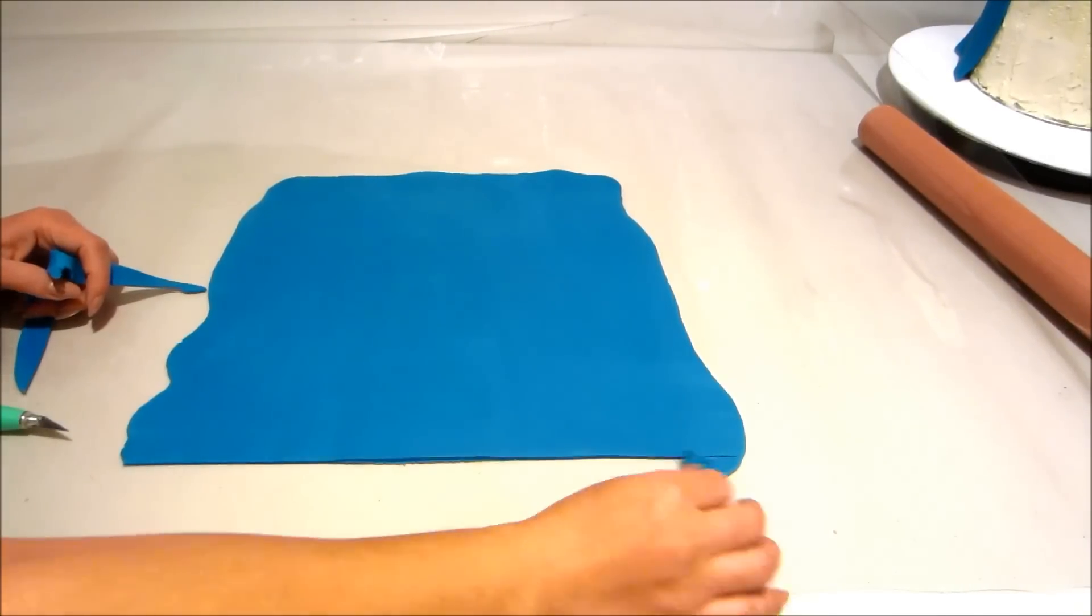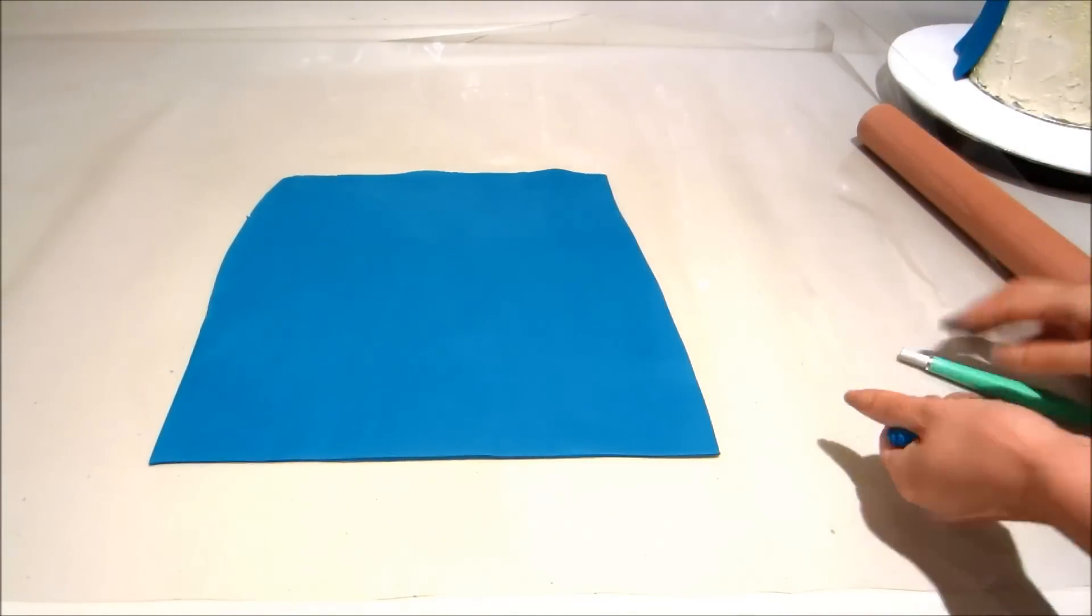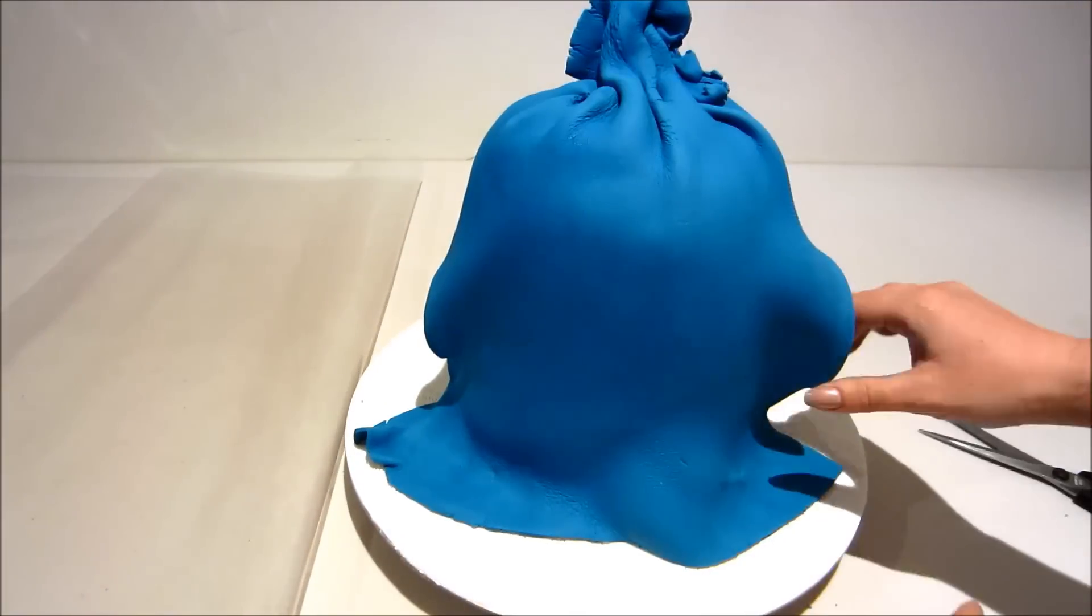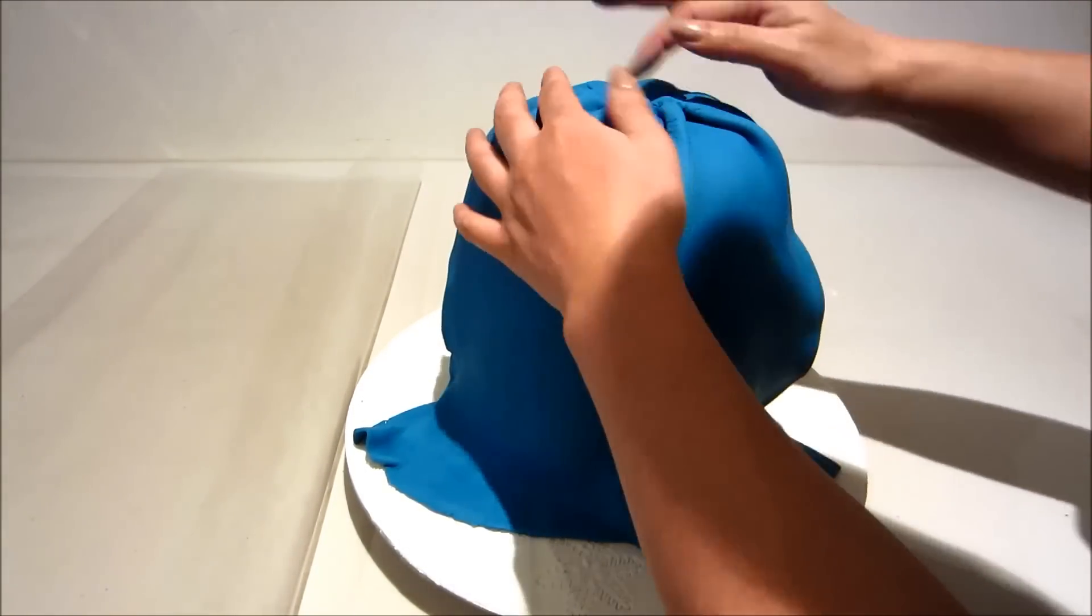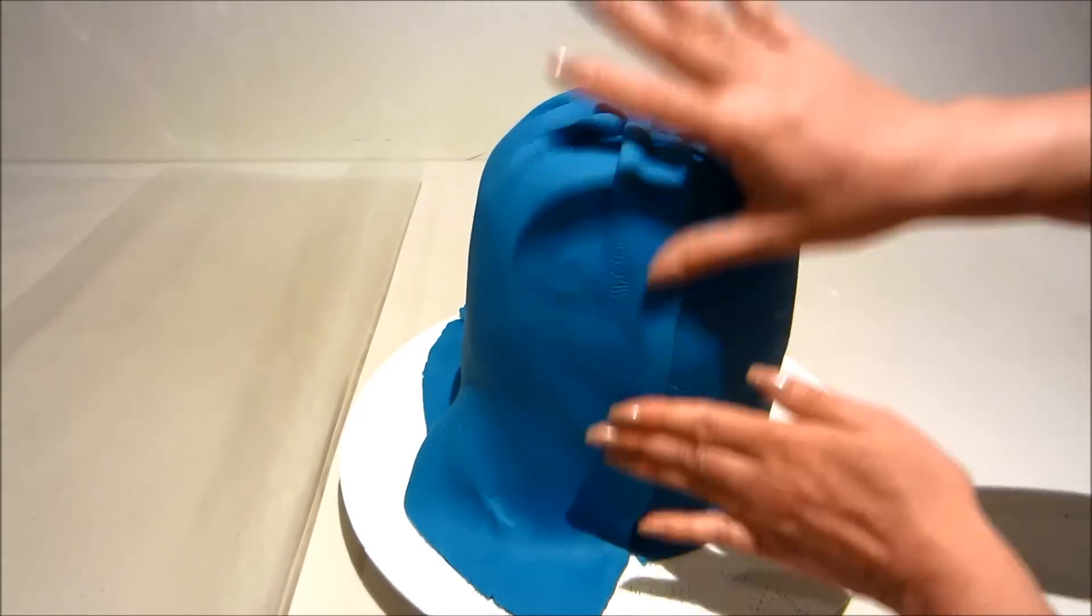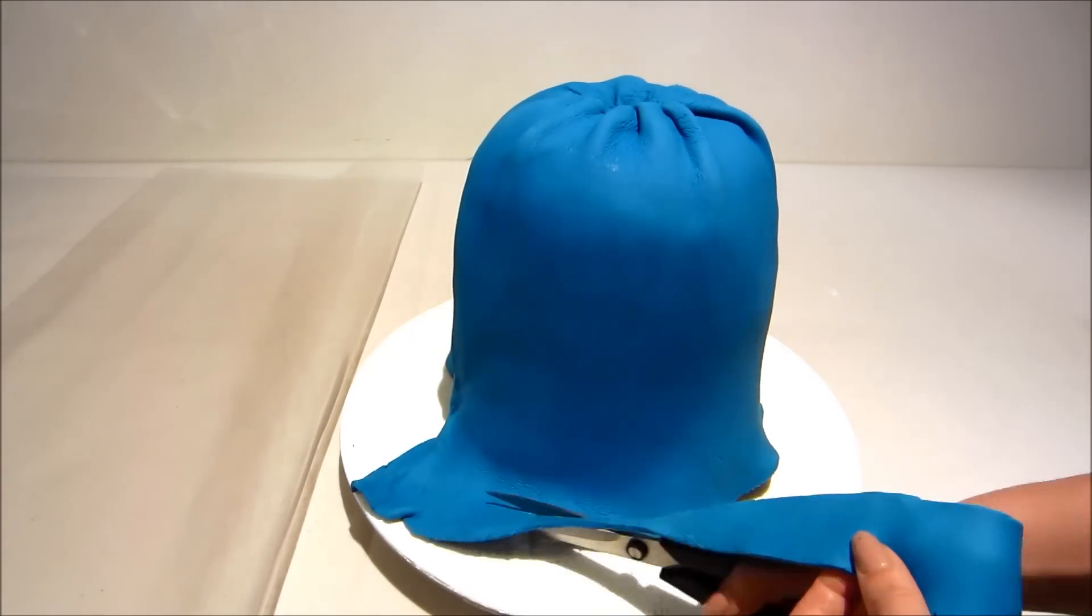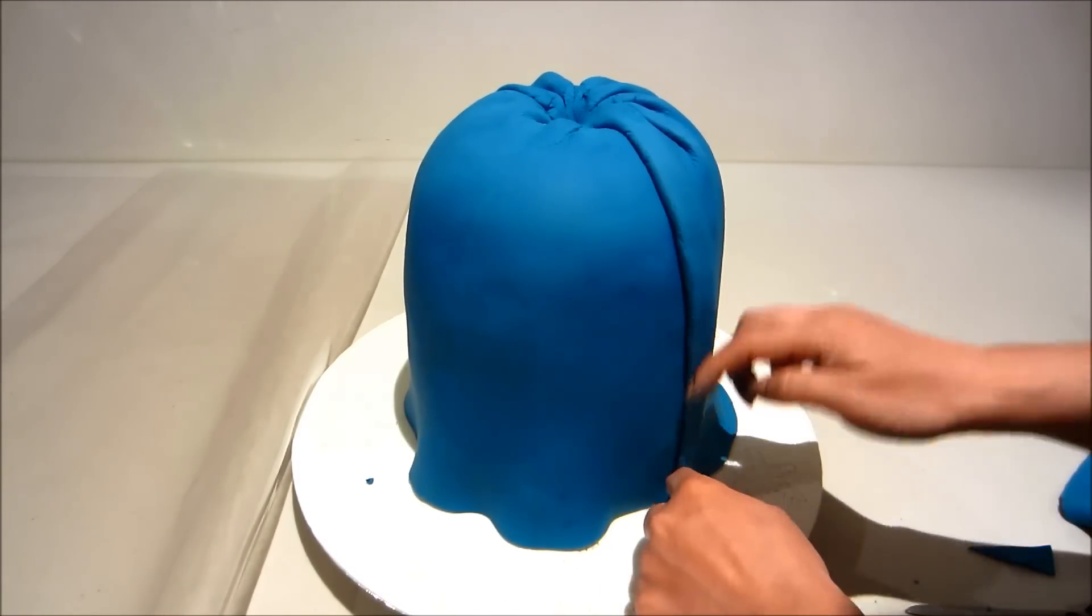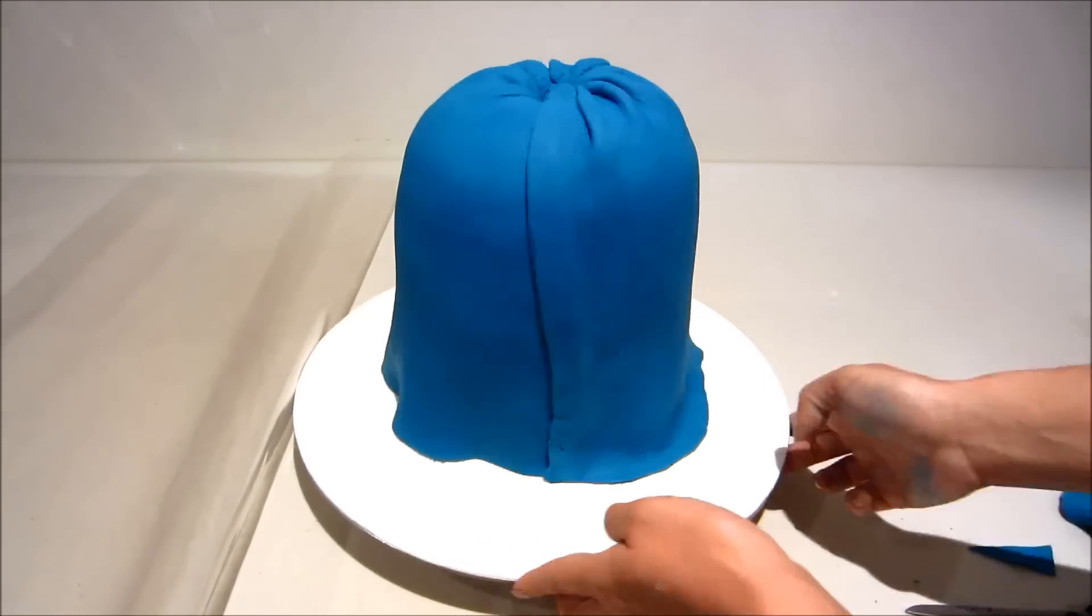And onto my second piece of fondant. Again cutting out a similar shape, using the excess fondant at the top, cutting off the excess and tucking the excess fondant into the cake at the top. Smoothing with my hands and trimming the excess at the bottom.